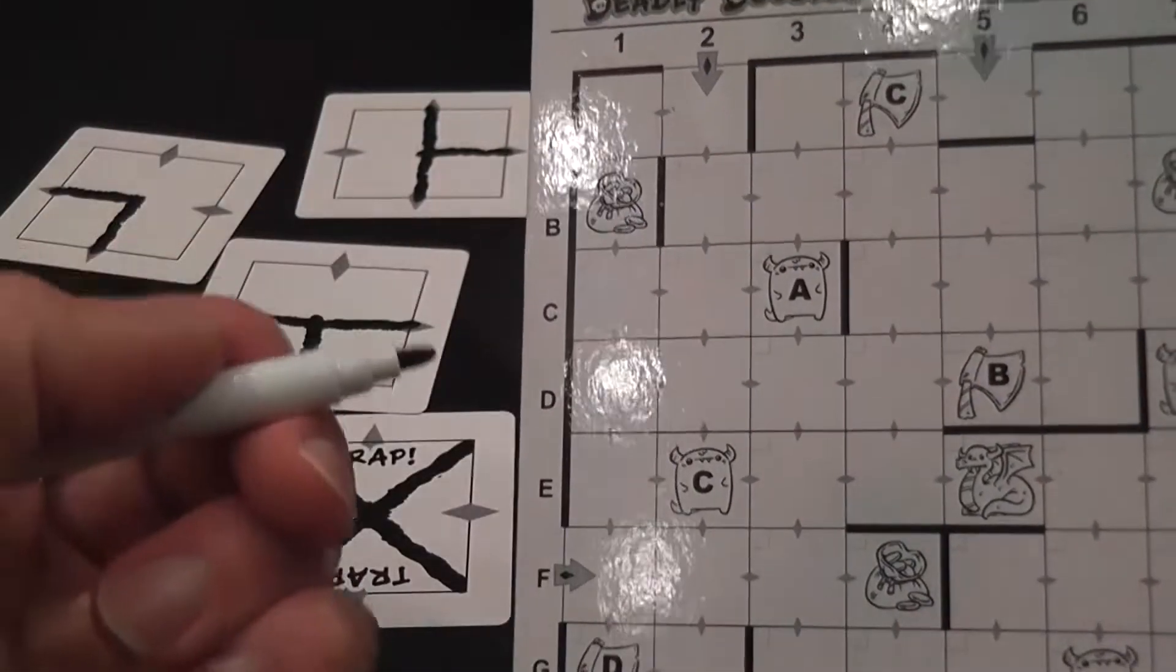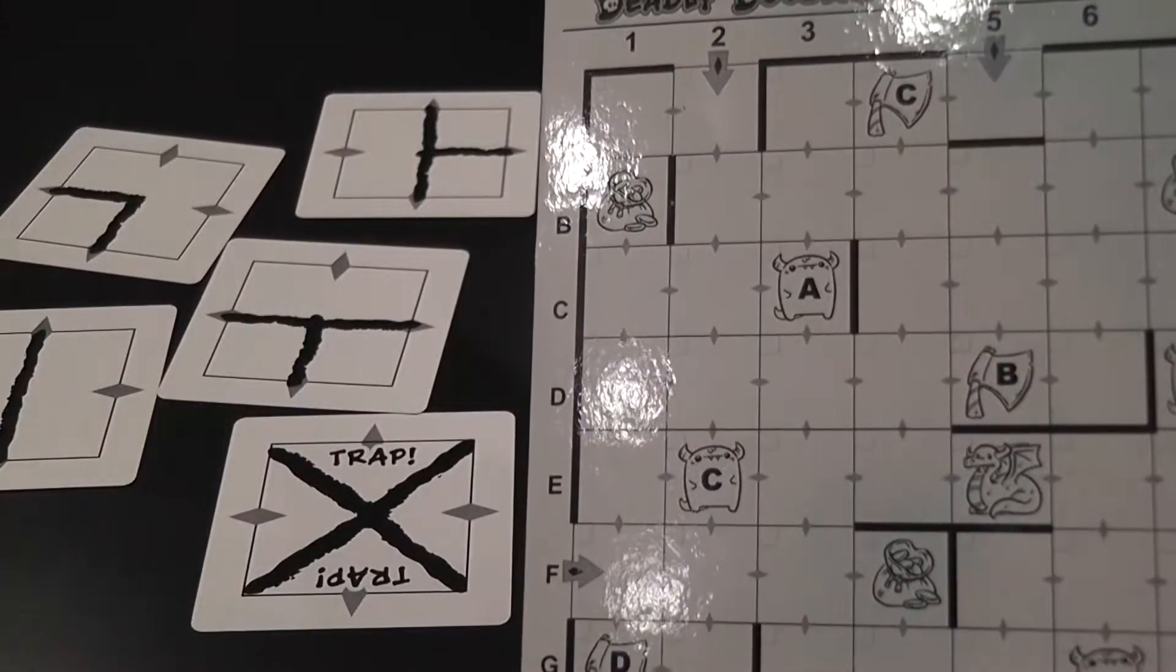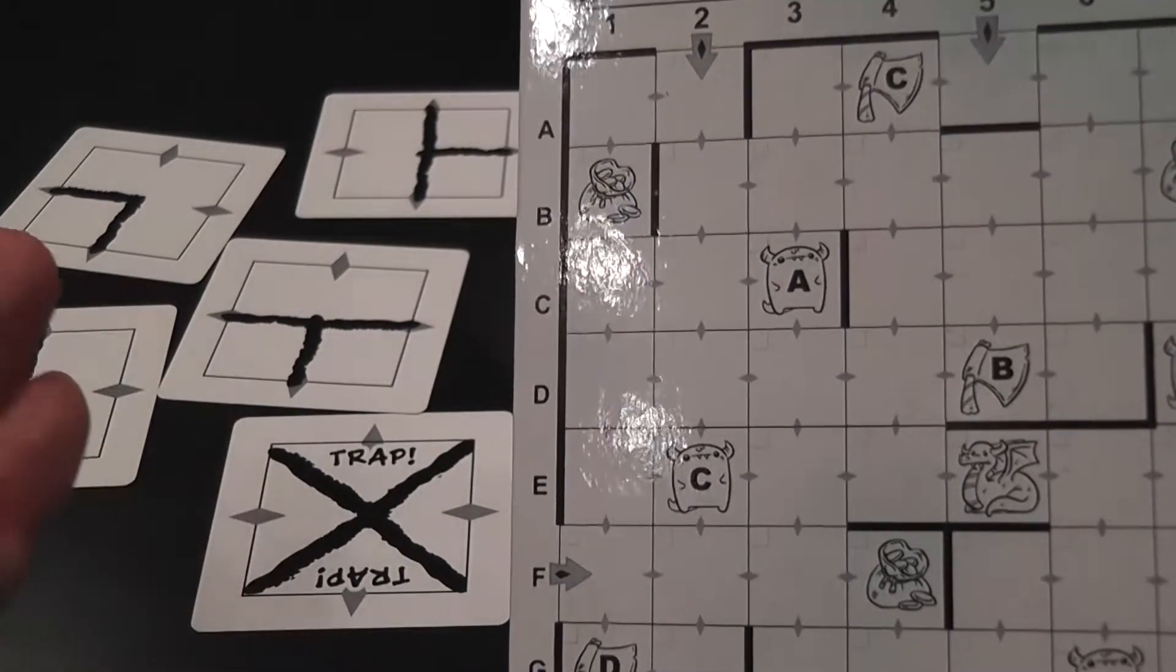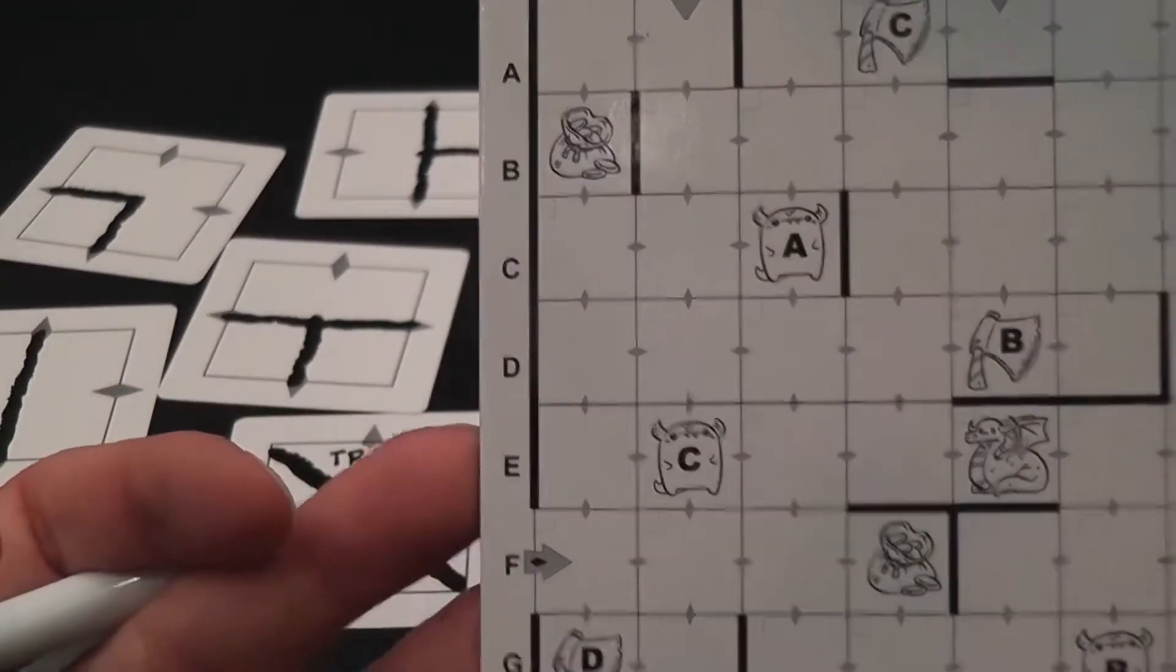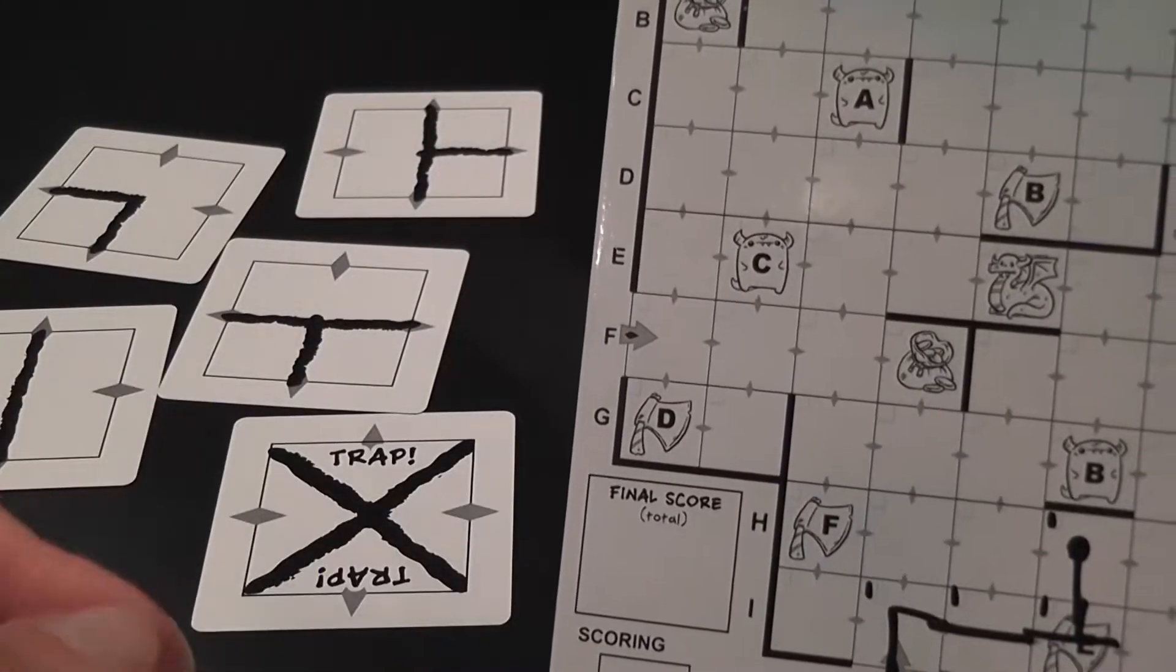If you place a trap in a location that the opponent plays a path on, then they lose points. So there's a bit of that guessing game there, but not all that much because it's really hard to figure out where the opponent is possibly going. So it's really just an extra random element.